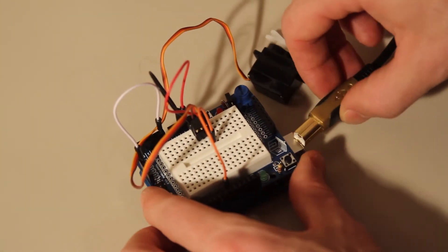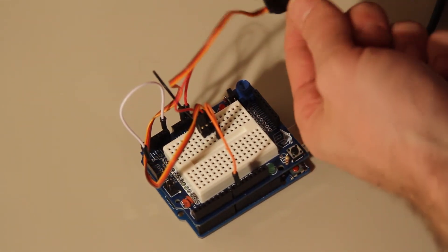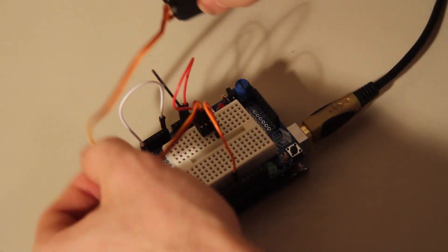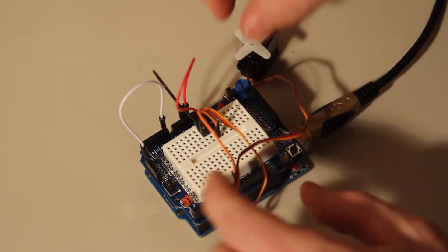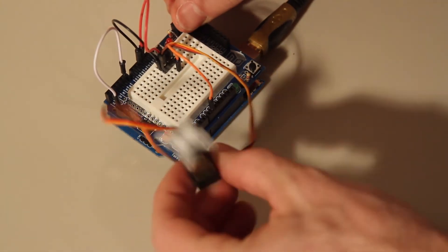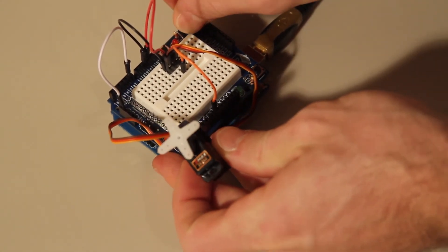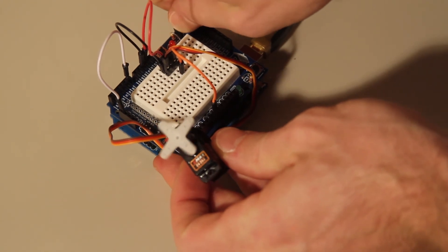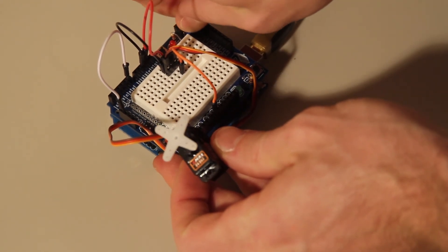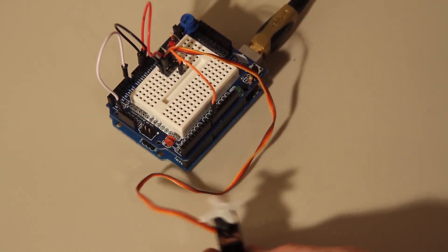And your servo is going to, should react a little bit. And then once you upload the program, I have already uploaded it, but once you upload it, you should be able to twist your potentiometer and see your servo move. As fast as you want or as slow as you want. Go start building robots.